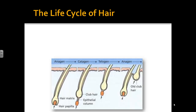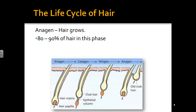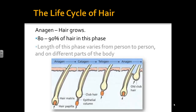There are three main parts of the life cycle of hair, conveniently in alphabetical order. Anagen is the first part — this is when hair is actively growing. The follicle is making more and more of it, and 80–90% of your hair is currently in this phase. How long your hair stays in the growing phase varies from person to person and by different parts of your body. Some people can only grow their hair to a certain length, while others can grow it much longer. Eyelashes, for example, will only grow to a certain point and then fall out.